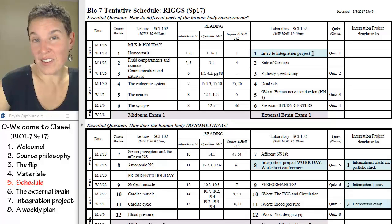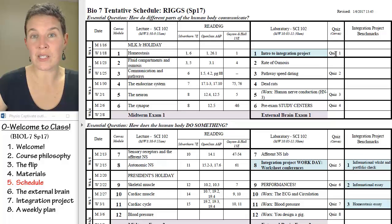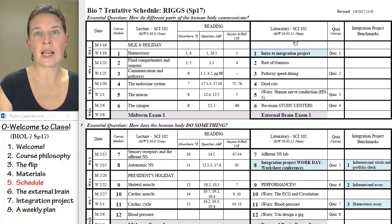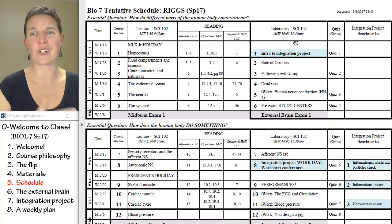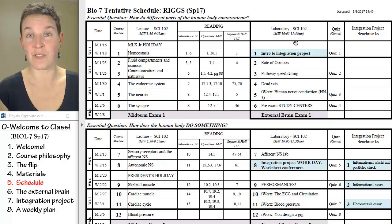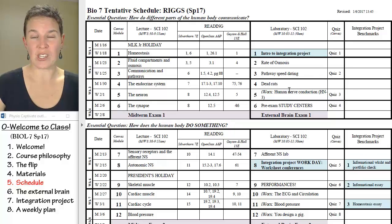It tells you the activity that we're going to do in lab. Every Thursday, once a week, there will be a quiz in Canvas. In a Riggs anatomy class, we have quizzes every single day in lab, but that's just not the case in physio. You have the quiz online over the weekend — every single quiz opens after class on Wednesday and closes at 11:59 PM on Sunday night. Every single week is exactly the same.